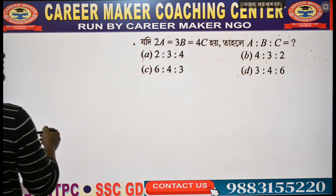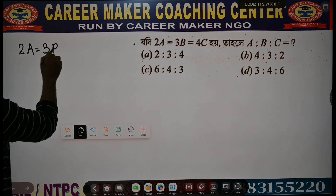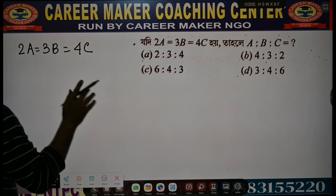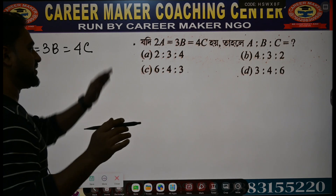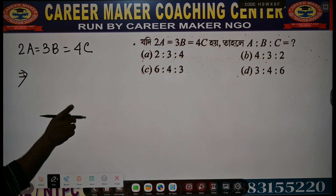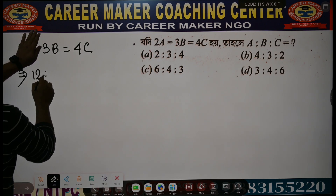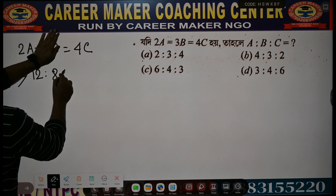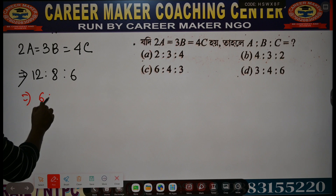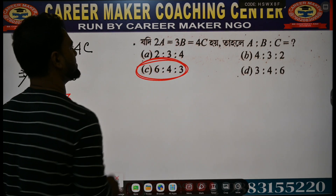Next: 2a equal to 3b equal to 4c. Find a is to b is to c. Keep the common value — LCM of 2, 3, 4 is 12. So a = 12/2 = 6, b = 12/3 = 4, c = 12/4 = 3. Answer: a is to b is to c equal to 6 is to 4 is to 3.